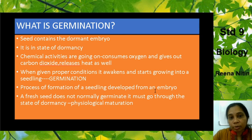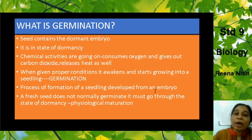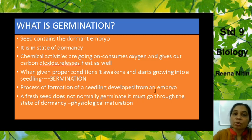A fresh seed does not normally germinate — it must go through the state of dormancy. The embryo has to develop, and for that it needs that state of dormancy. That is physiological maturation: it needs to mature physiologically so that it can produce a new seedling.